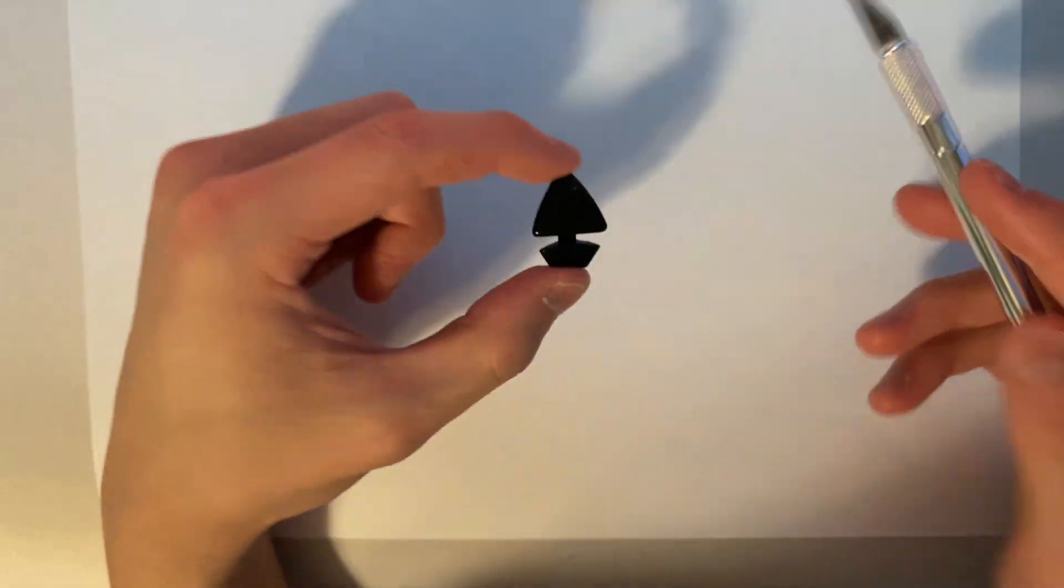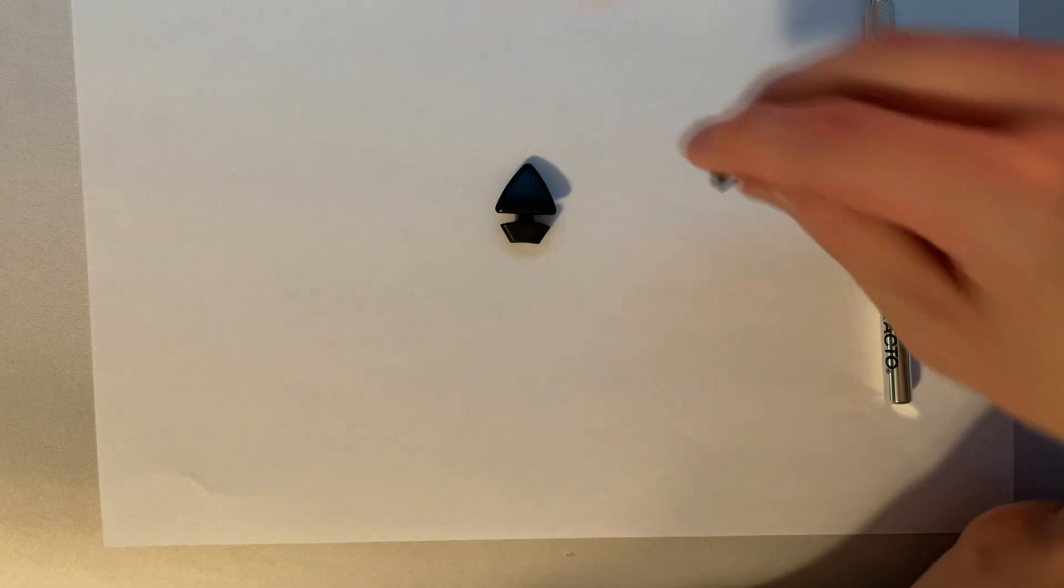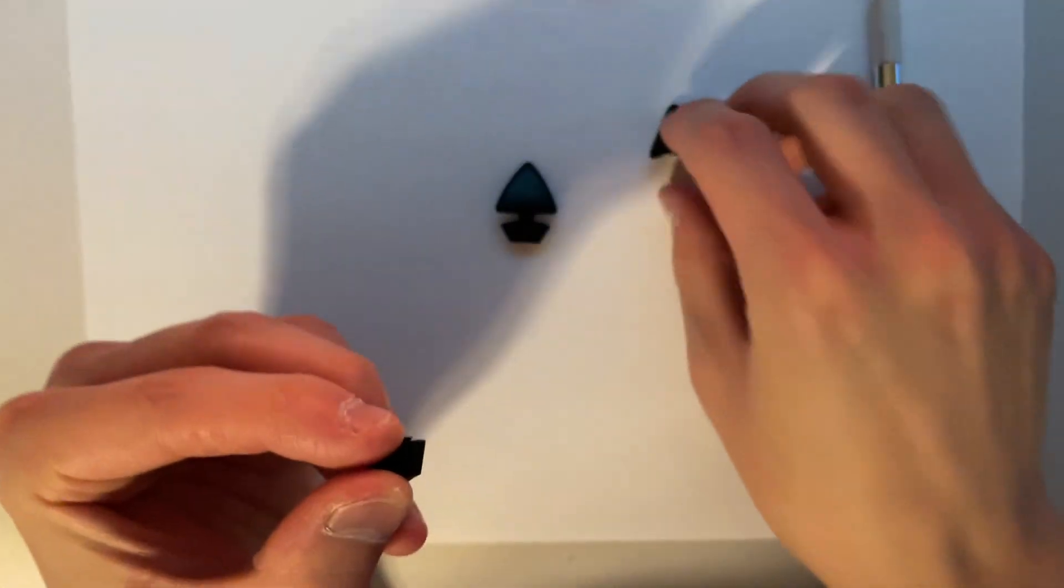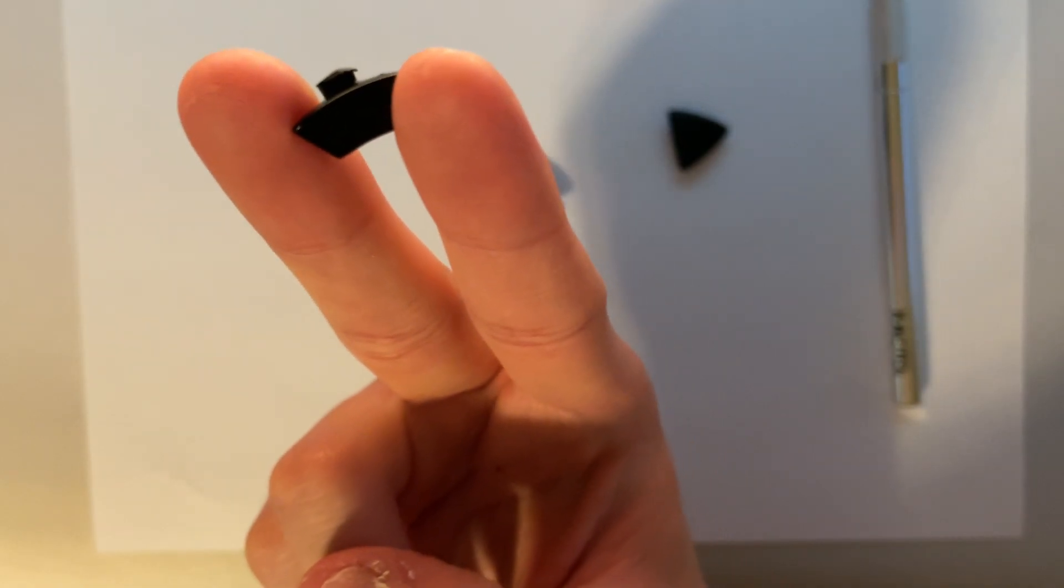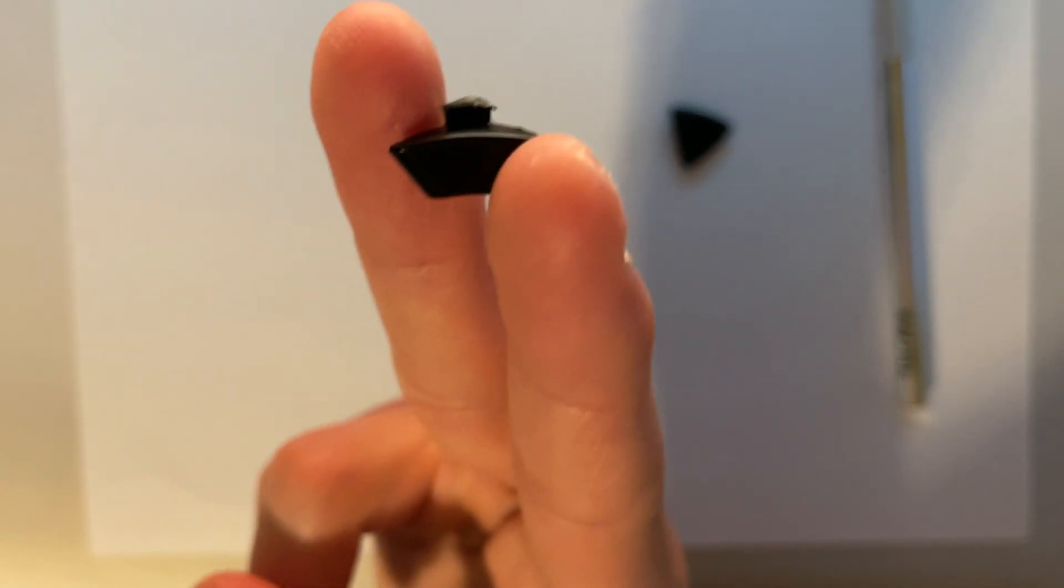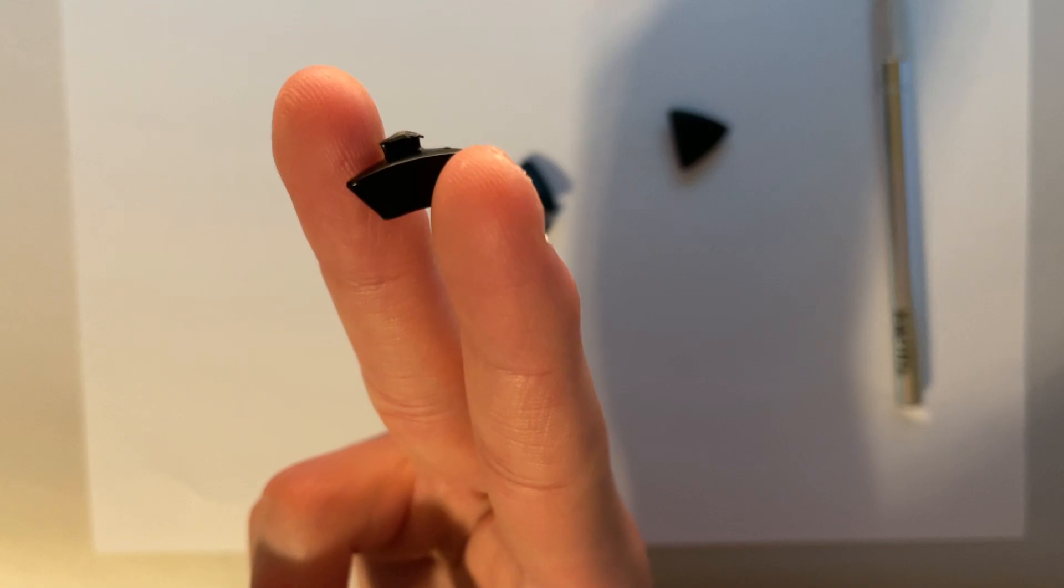And this triangle comes off and it will look like this. The triangle piece comes off and the bottom piece that you want will look something like that, where you have the base and a decent amount of the neck still on it.